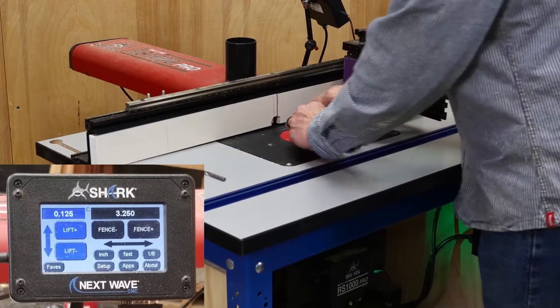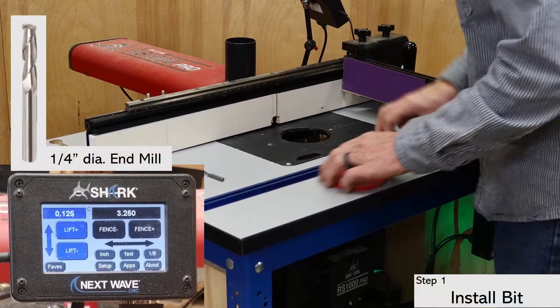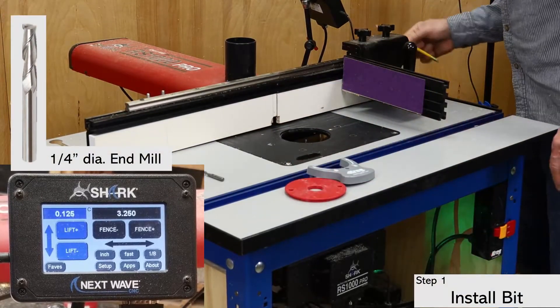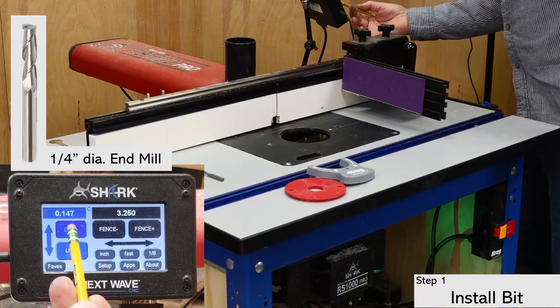The first step, of course, is to install the bit. For this box joint, I'm using an up spiral quarter inch end mill. A one or two flute straight bit will also work.